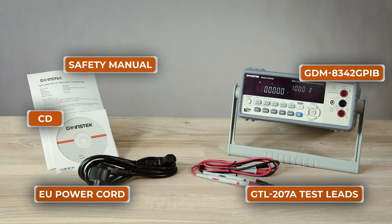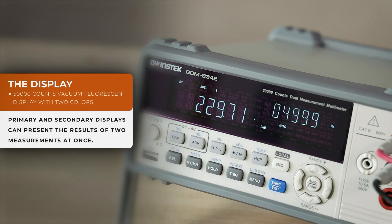It has a dual high quality 5 digit vacuum fluorescent display which allows the main measurements and an auxiliary one to be displayed at once to save your time.